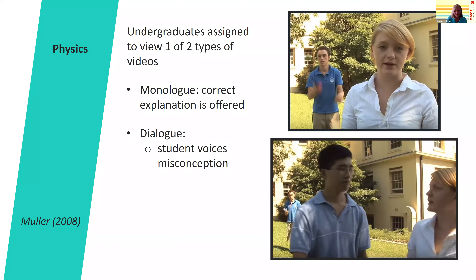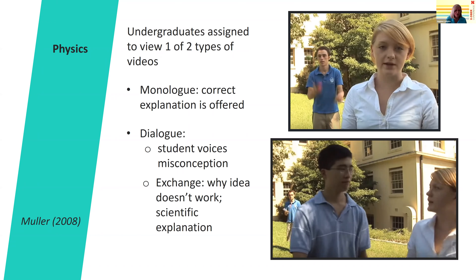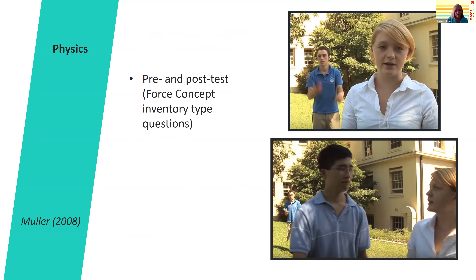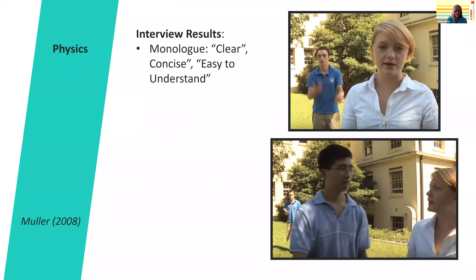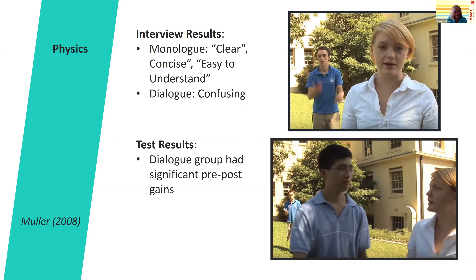In the monologue treatment, a correct explanation for gravitational force is offered. In the dialogue, a student voices a misconception, and then a tutor and the student have an exchange about why that idea won't work, followed by a correct scientific explanation. Participants were given a short pre- and post-test using forced concept inventory questions and were also interviewed. Students who viewed the monologue thought it was great — clear, concise, easy to understand. Students who viewed the dialogue actually found it kind of confusing. However, they were the only group that had pre-post gains, unlike the monologue group.